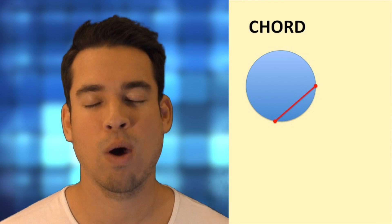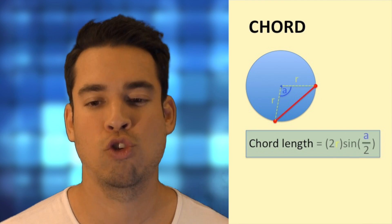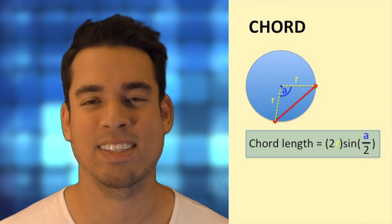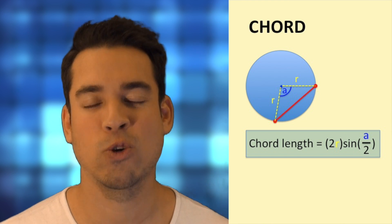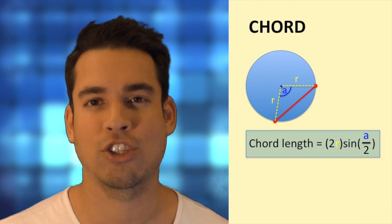Now to calculate the value of a chord length, there's a really interesting formula, and it's two times the radius times sine of a, which is that angle that is created when we have two radii come out and touch the opposite ends of this chord, over two.